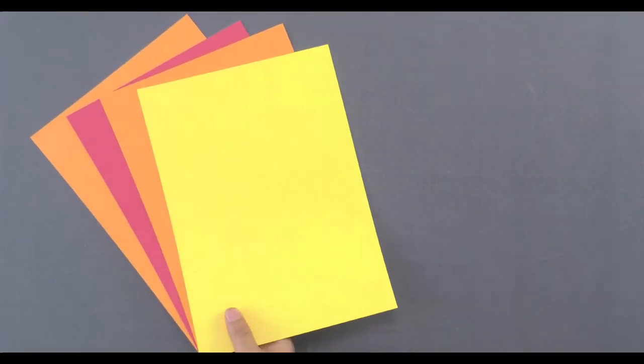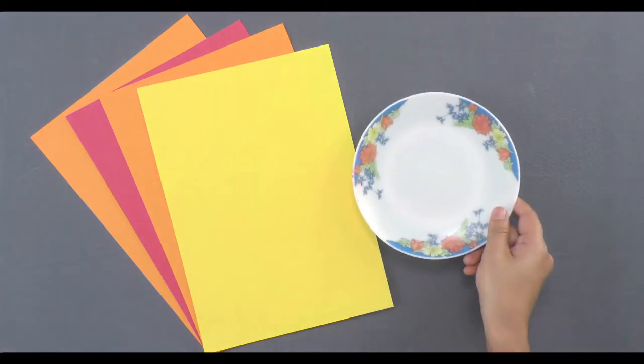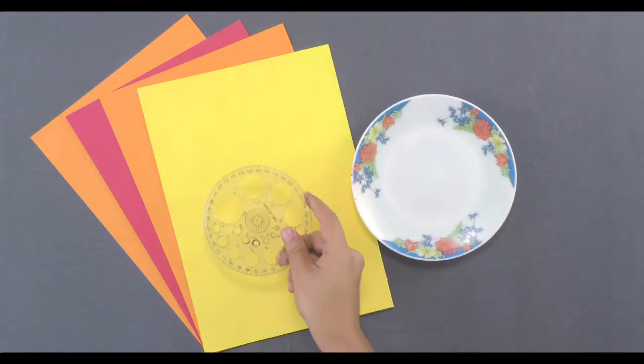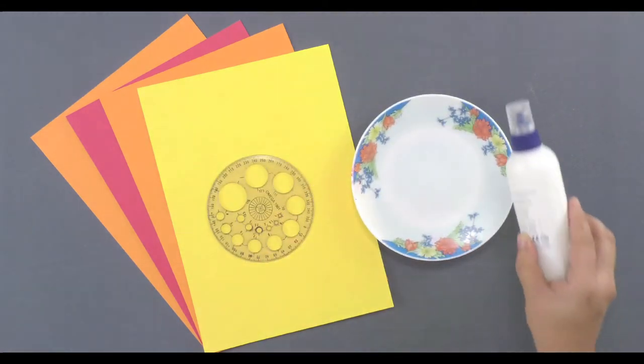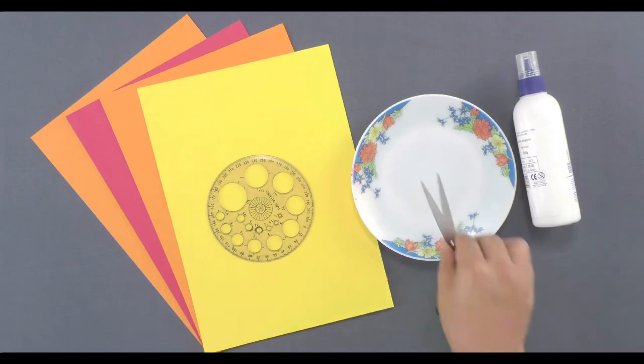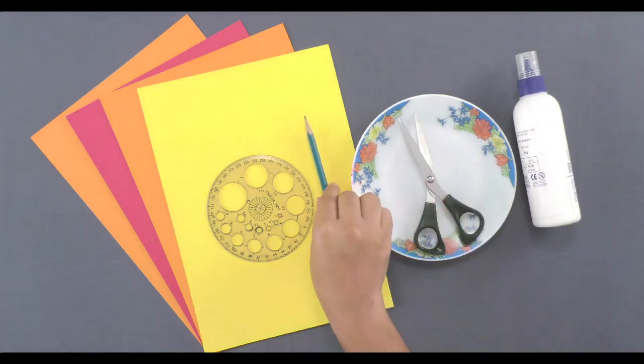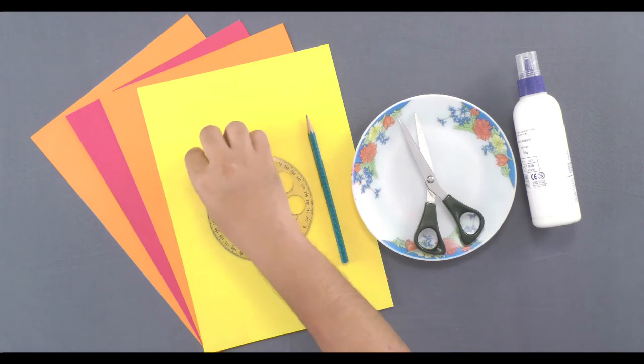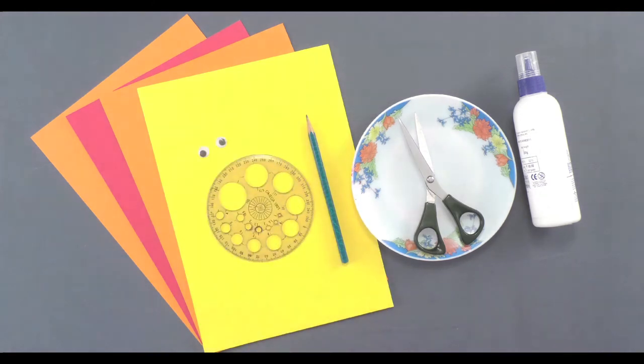Materials required: multicolored chart papers, bowl and plate, 360 degree protractor, adhesive, scissors, pencil, and googly eye. We are going to make a paper fish using different materials like chart papers and googly eye.